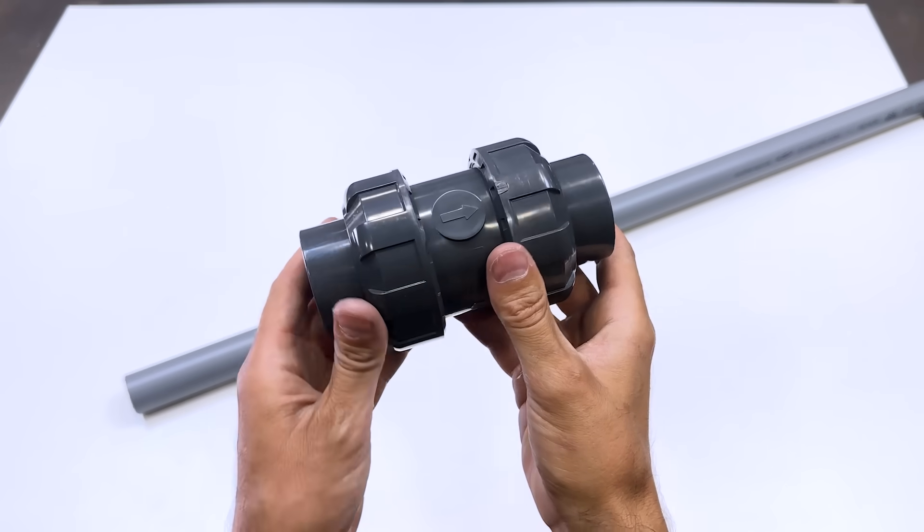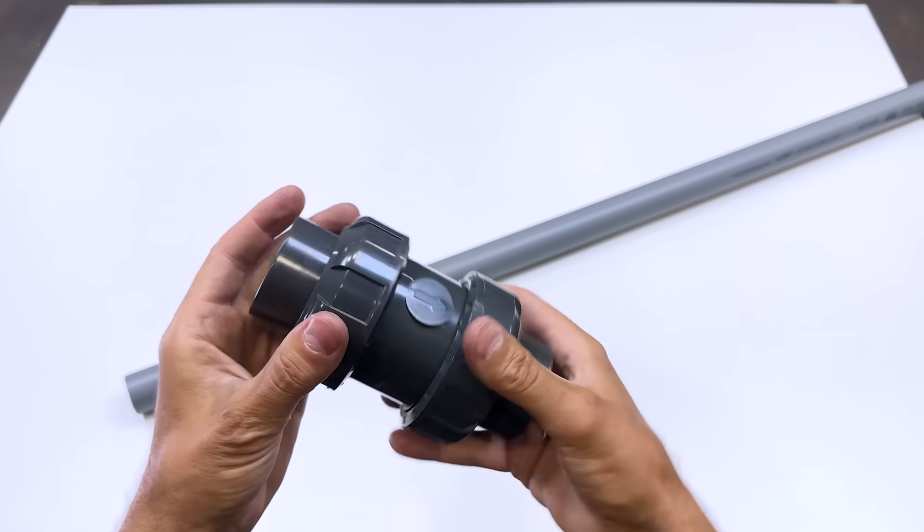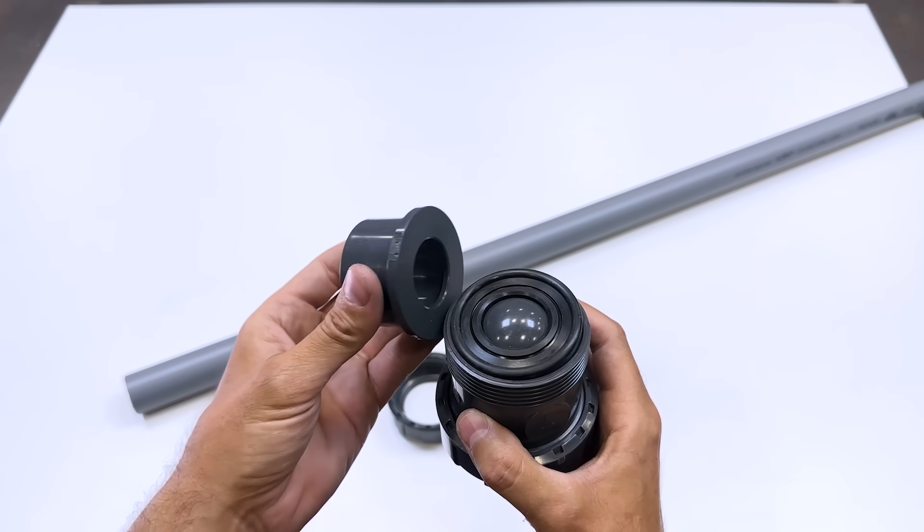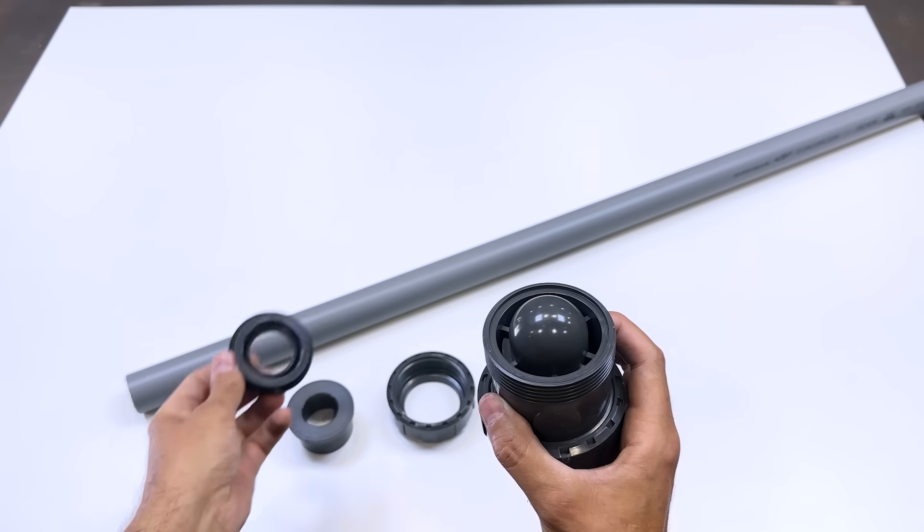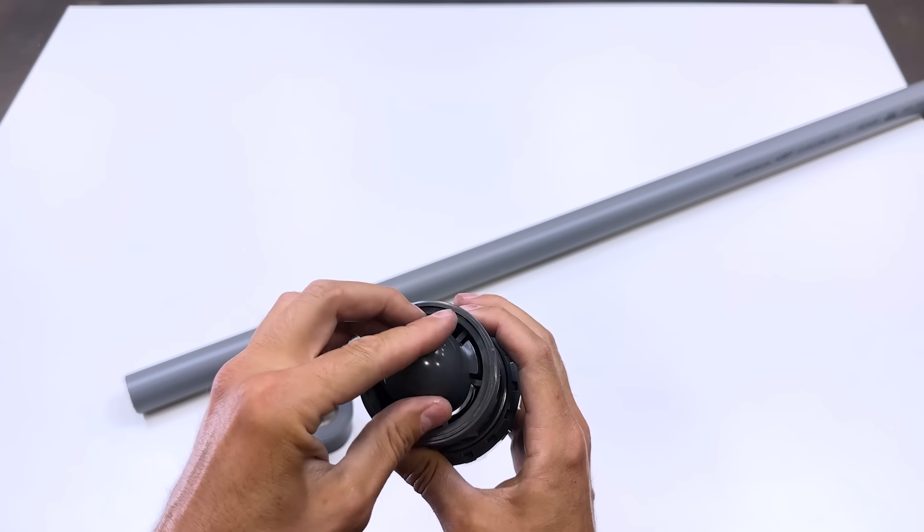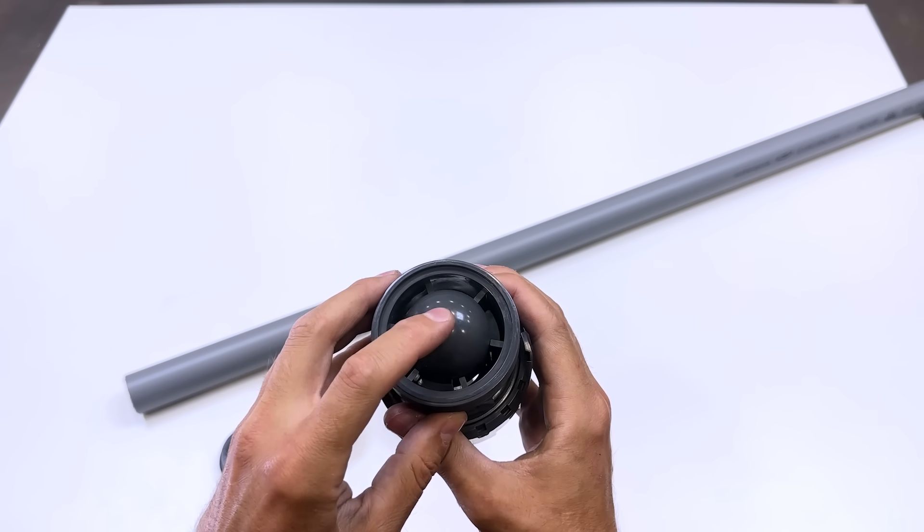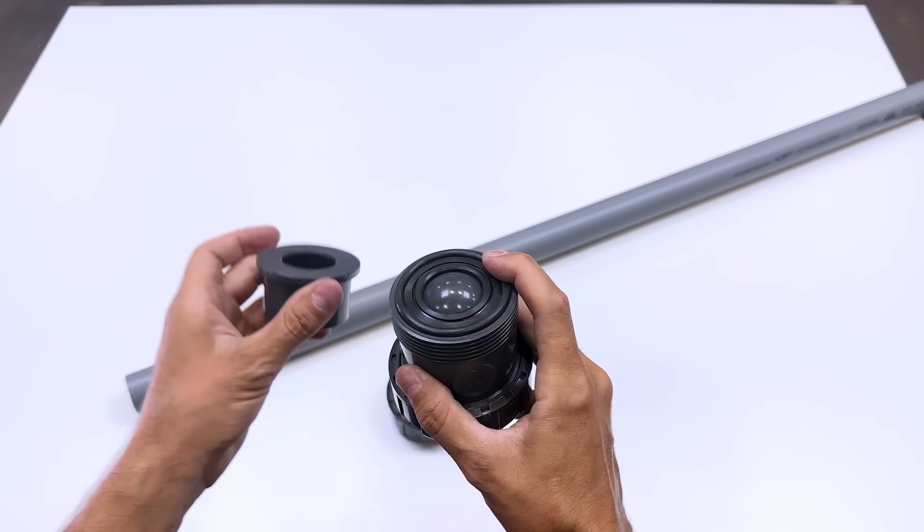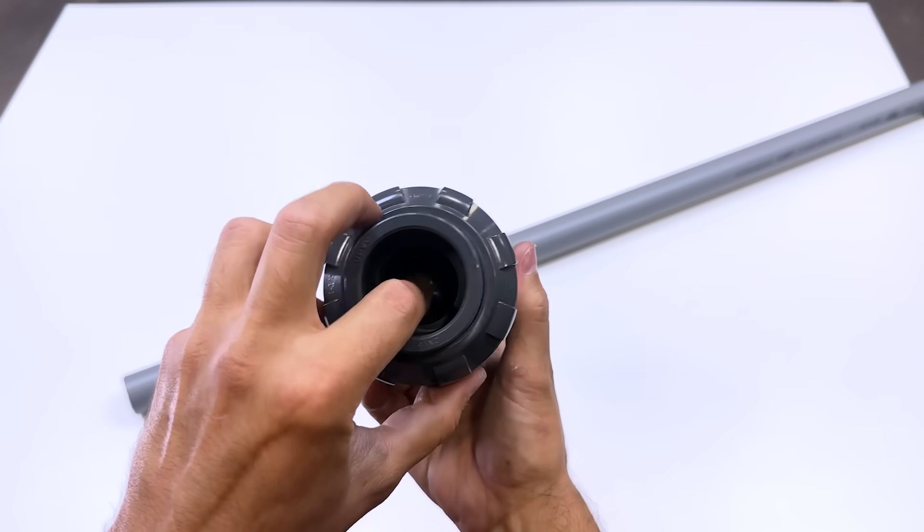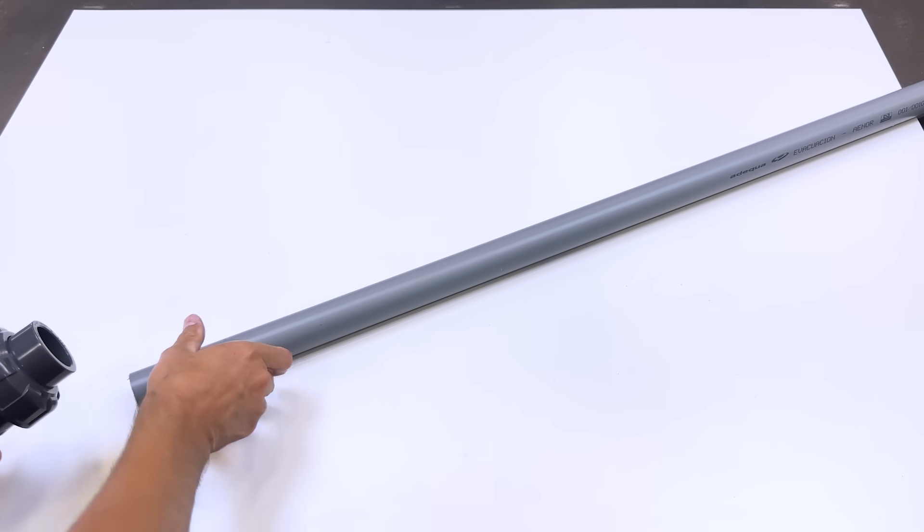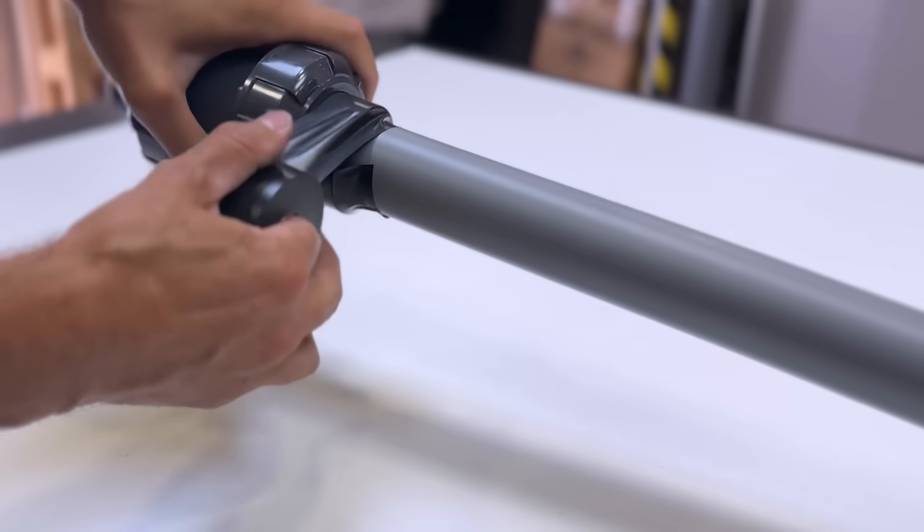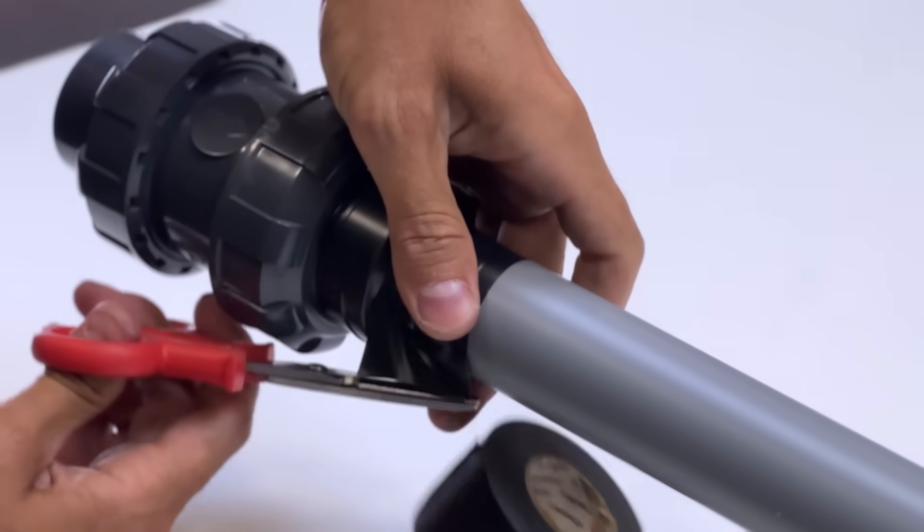This is a non-return valve. Water can only flow in the direction indicated by the arrow. It has a system inside that allows water to flow in one direction and blocks it in the opposite direction. We connect it to the pump's suction tube using this elongated tube. It must be long enough to extract water from a river or lake.